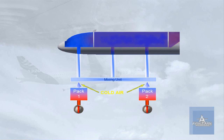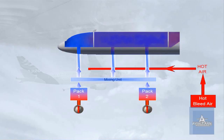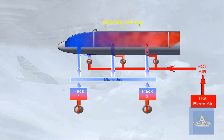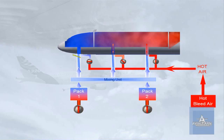Normally, cold air is delivered by the packs and is then sent to the three zones. Since the different areas of the aircraft may require different amounts of cooling or heating, hot bleed air can be added via trim air valves to obtain the demanded temperature for a zone. In the example shown, no hot air is being added to the cockpit zone, some hot air is being added to the forward cabin zone, and a lot of hot air is being added to the aft cabin zone.